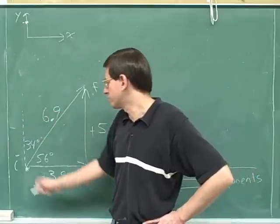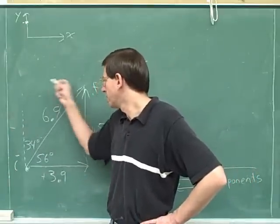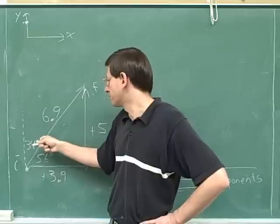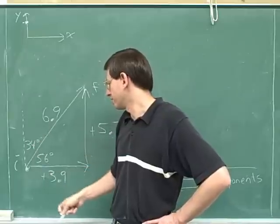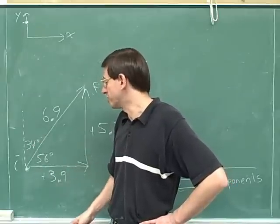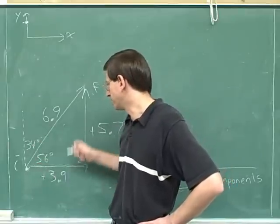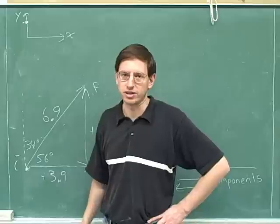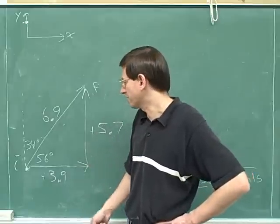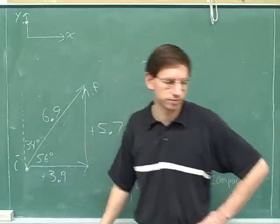You can either say that we're making an angle of 34 degrees with the vertical or 56 degrees with the horizontal. It just depends on which right triangle you chose to draw. Originally I drew the right triangle above the overall resultant vector, but it would have been equally natural to draw it below the resultant vector. Either way, it gives you the right answer.